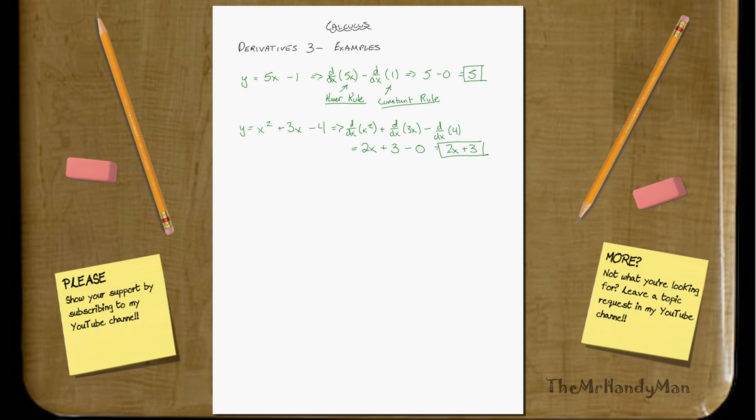We can work through the next one. y equals 1 fourth x to the fourth power plus 8. Notice how you can just kind of view everything in here as one thing. Well, this 1 fourth is just a constant multiplier.